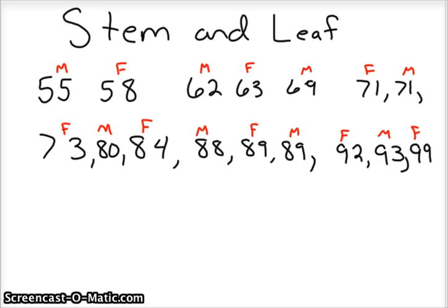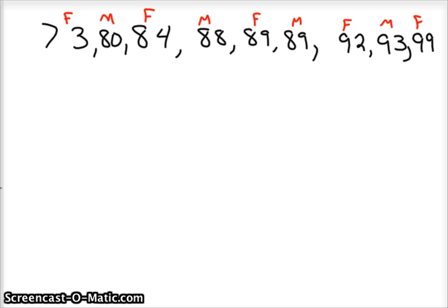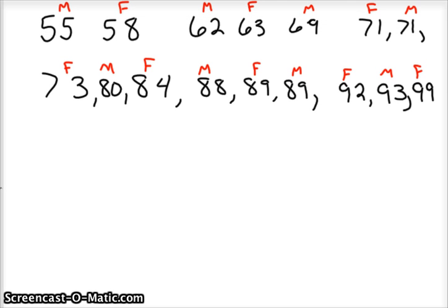So when you're making a stem and leaf plot, the first thing you do is order the data, which is already done for us here. Break it up into classes, which is already done here. You've got a set of 50s, a set of 60s, a set of 70s, a set of 80s, and a set of 90s. And so you're ready to plot the data.